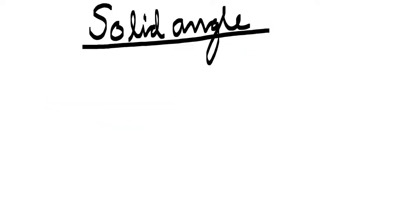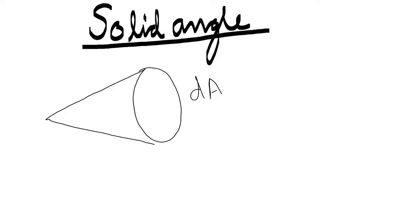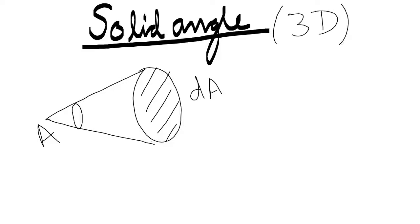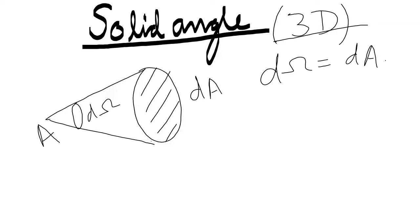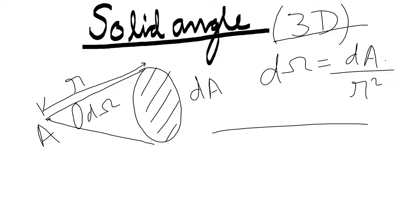Now let us see what solid angle is. Suppose this is an area dA and this is a point A. I want to see: if I emit a light source from point A to this area dA, what will be the angle covered? Since it is not in 2D but in 3D, this interpretation of angle in 3D is actually the solid angle. The formula for solid angle d_omega is given as dA over r-squared, where r is the distance of dA from point A.